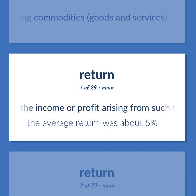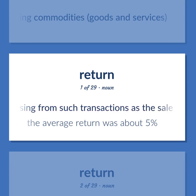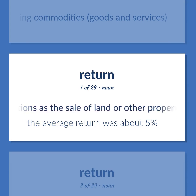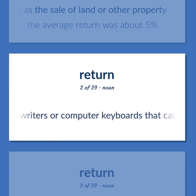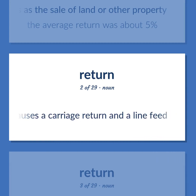The income or profit arising from such transactions as the sale of land or other property. The average return was about 5%. The key on electric typewriters or computer keyboards that causes a carriage return and a line feed.